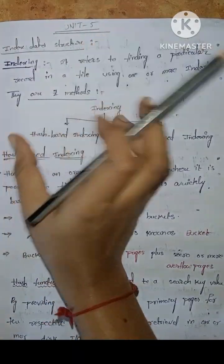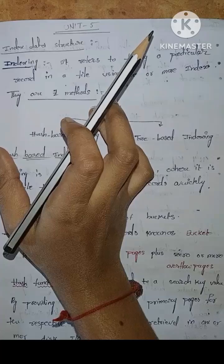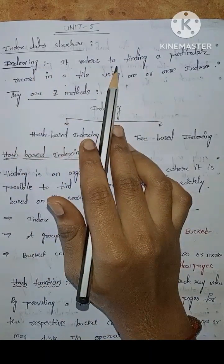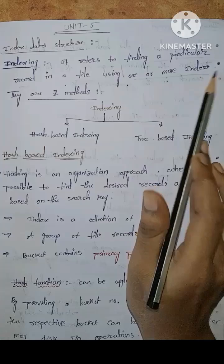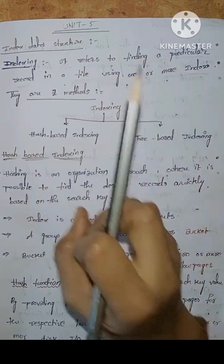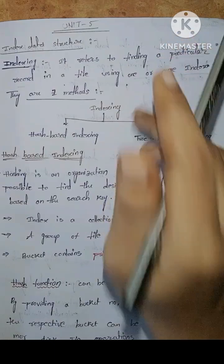In the fifth minute, we have an important question about index data structure. It refers to finding a particular record in a file using one or more indexes. We use one or more indexes to find a particular file. Indexes are two types.